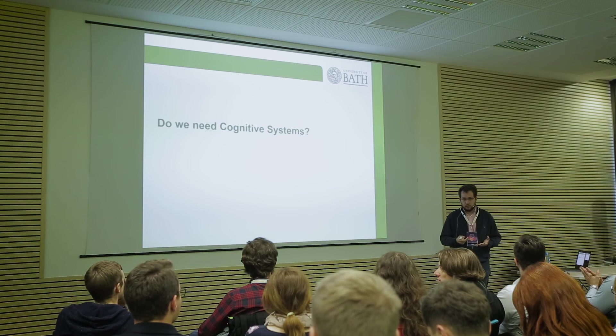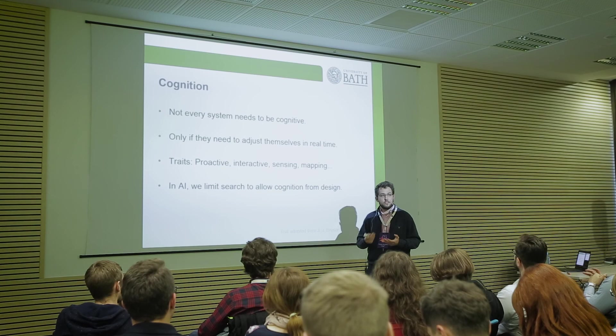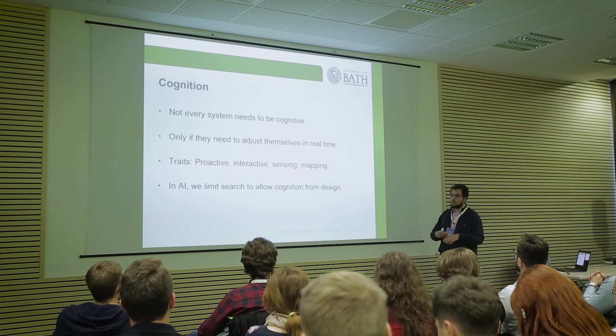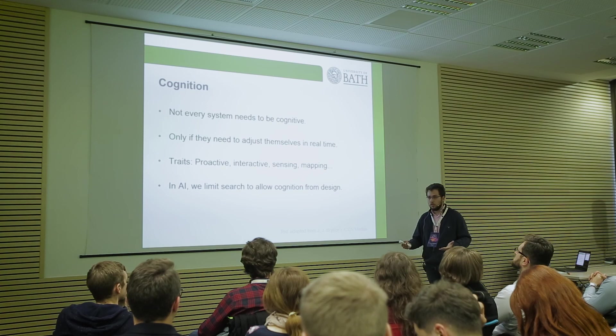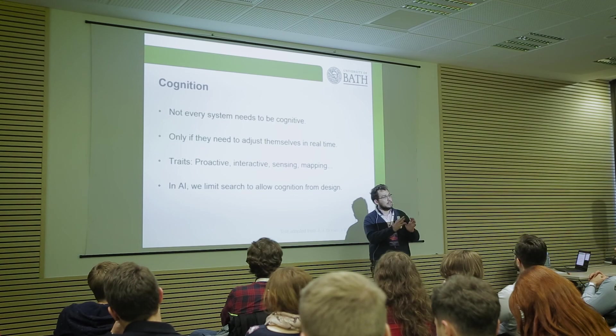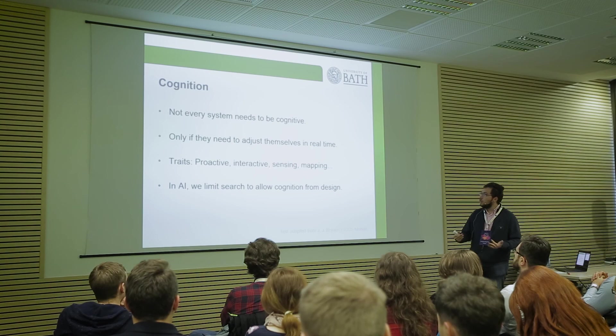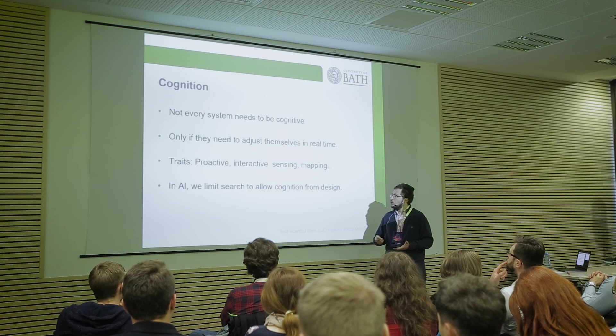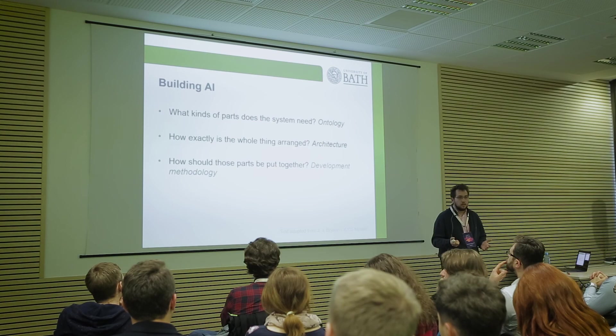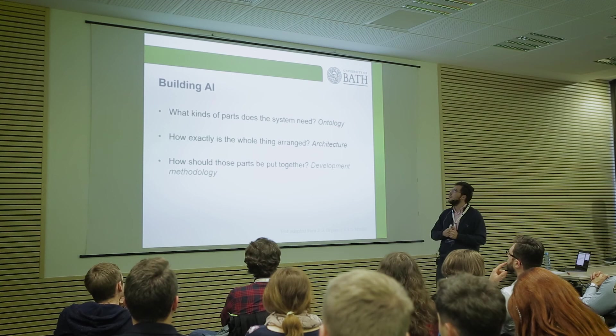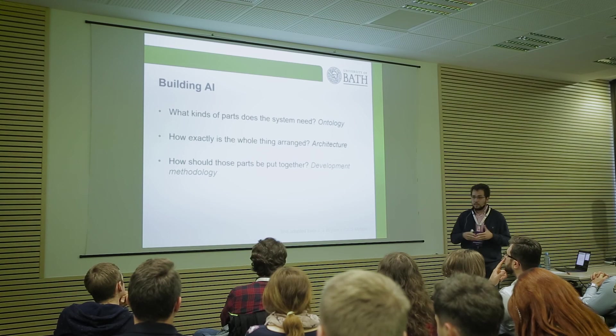So do we actually need systems that are cognitive? Yes, but not all systems need to be cognitive, and not all systems need the same level of cognition. As a rule of thumb, any system that is proactive or interactive needs to have some cognition. It's up to the developer to decide how much real-time search is needed. In AI, in order to make things efficient, we try to limit search and allow cognition from the design of the agent. How do we build cognitive systems? Like software engineering, we need parts — which in AI we call ontology — an architecture to arrange those parts, which is a cognitive architecture, and a development methodology.